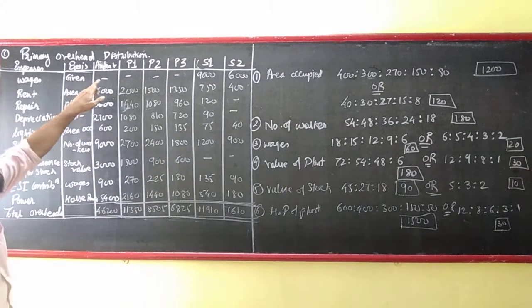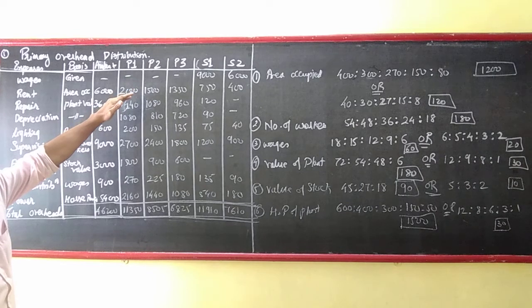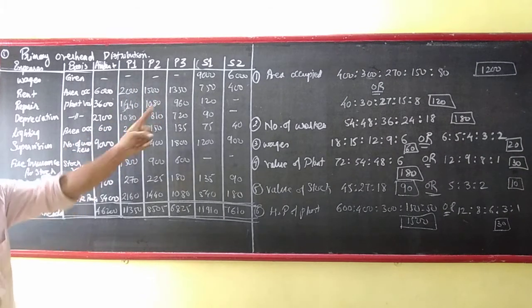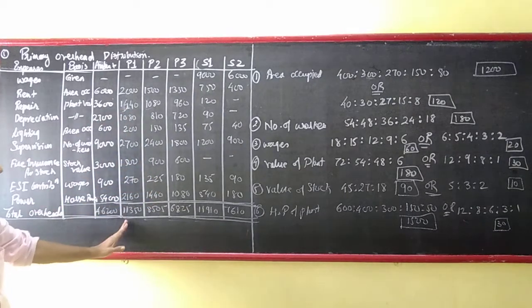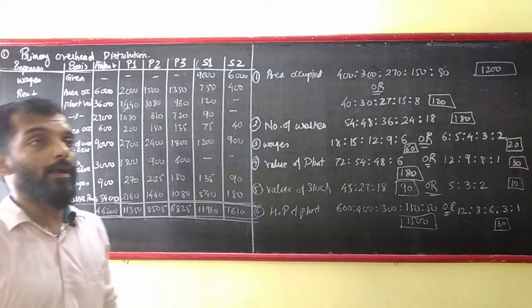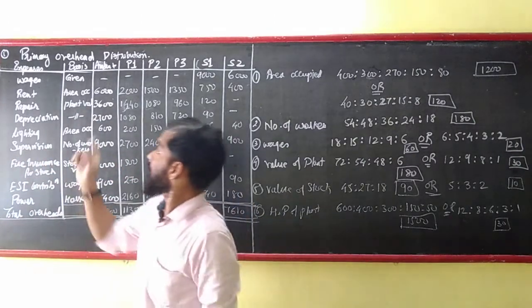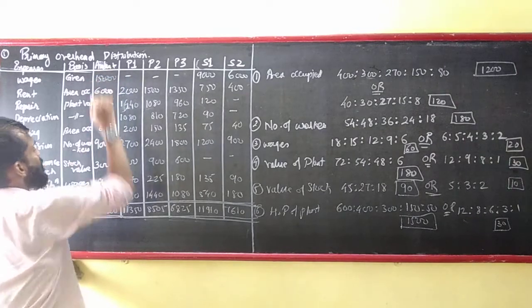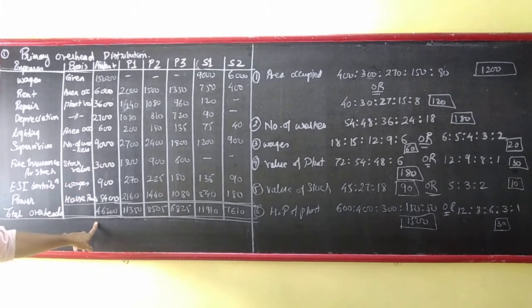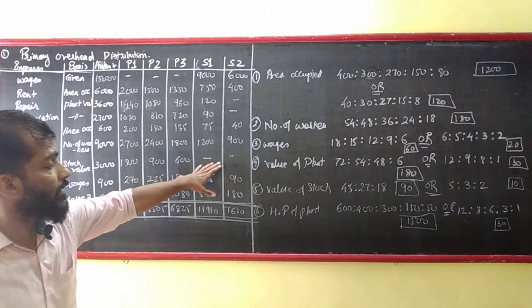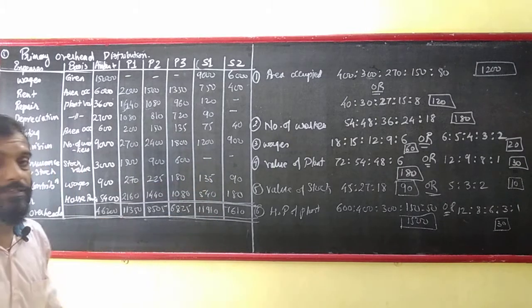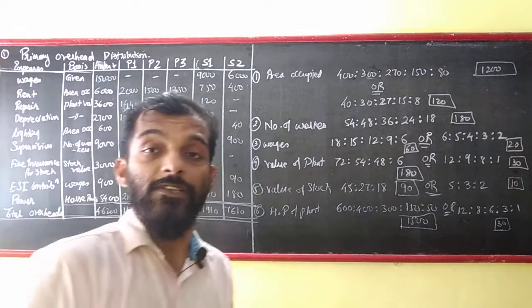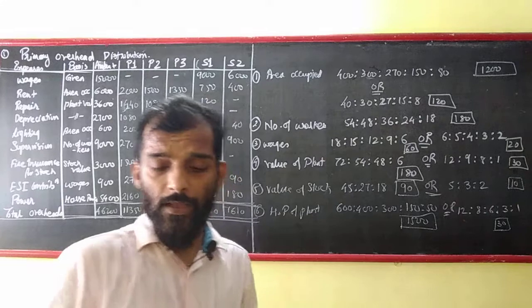Direct wages for P1, P3. For service departments you will take S1 and S2, 9,000 and 6,000. Based on this ratio I have divided the expenses. I have just totaled it. The total is 46,200, and all this should be equal to 46,200. I have replaced all because 500. I hope the first sum is clear, we will meet with the second sum within a short span.